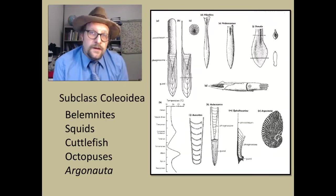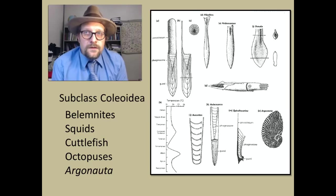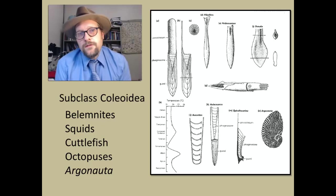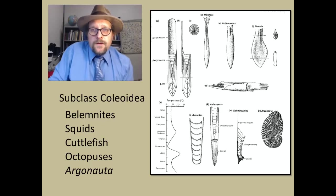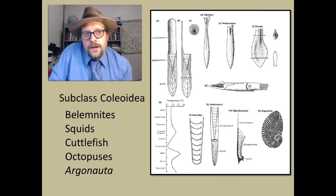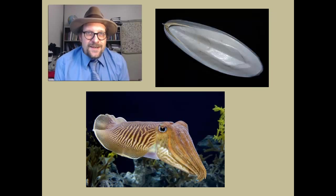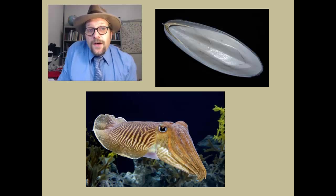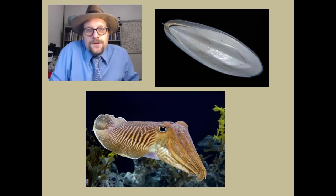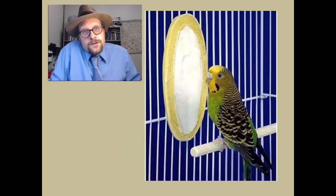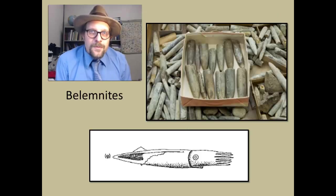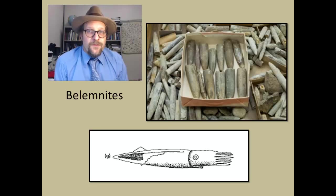The last group that we are going to examine is the subclass Coleoidea. That includes the belemnites, the squids, the cuttlefish, the octopuses, and the argonauts. These are recognized in the fossil record by several members of this group having an interior skeleton and calcite forming the hard part that is preserved in the fossil record. In cuttlefish, this is a calcareous bone that helps with buoyancy. This can be preserved in the fossil record since it is composed of calcium carbonate. This cuttlebone is also given to birds and sold in pet stores as a source of calcium.